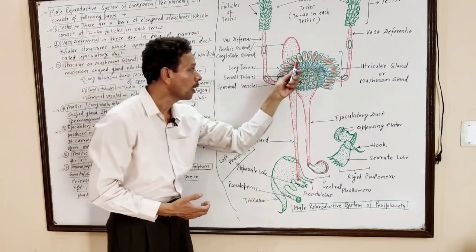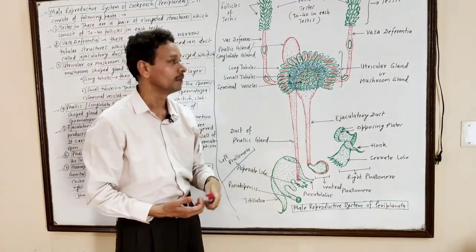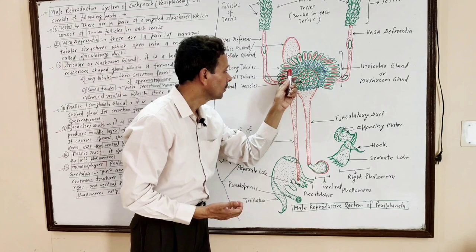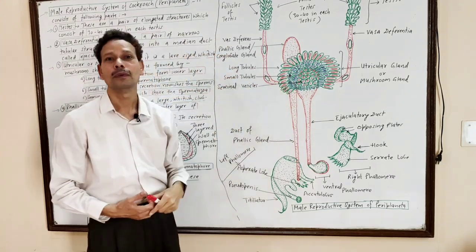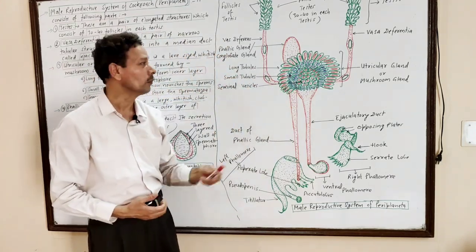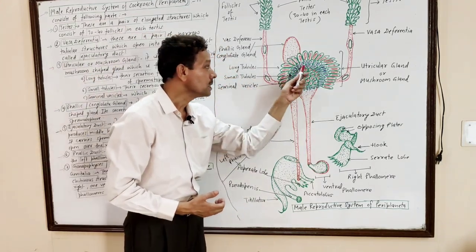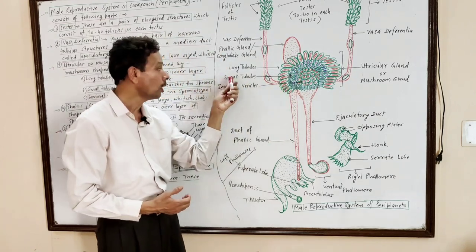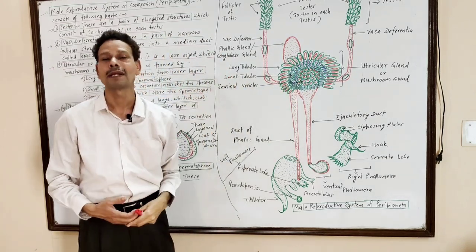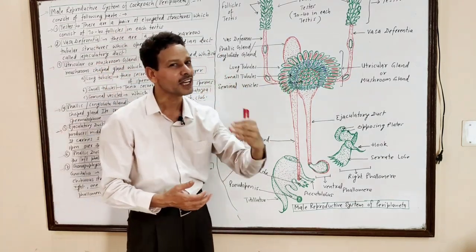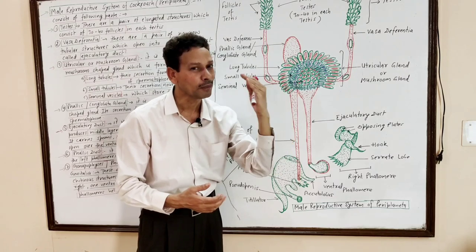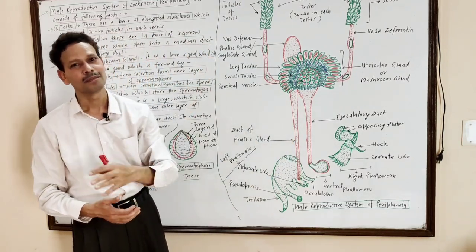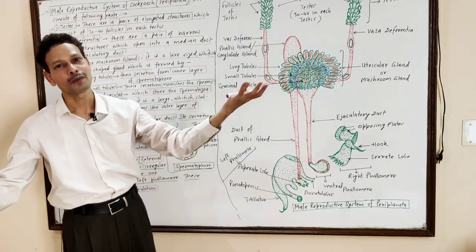The second part of the mushroom gland consists of small tubules present in the middle region. The secretion of these small tubules nourishes the spermatogonia.